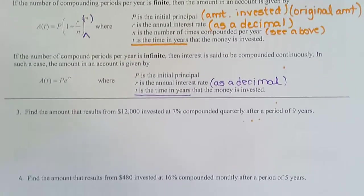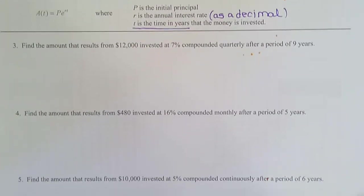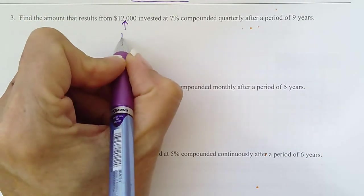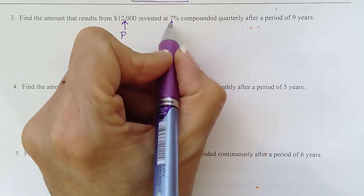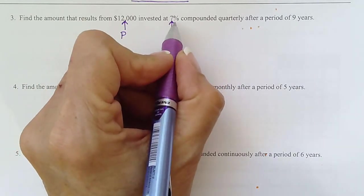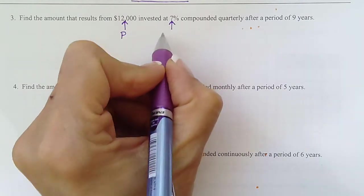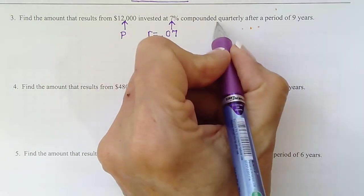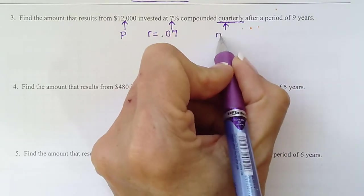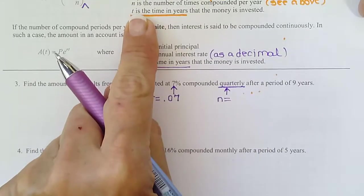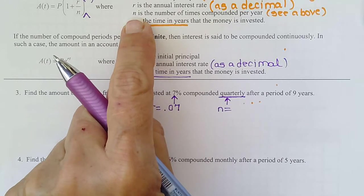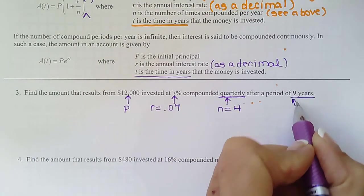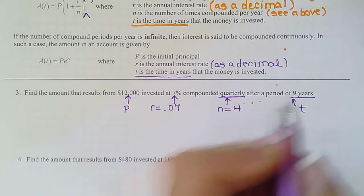Let's take a look at what we have here. Find the amount that results from $12,000 being invested. So what would $12,000 be called? What letter? P, right, the principal. And 7% - how would we write that as a decimal? Move the decimal place two places. Right now it's after the 7, so in front of the 7, add a 0. So it's 0.07. That will be my r. Quarterly - four quarters in a dollar, so the number of compounding periods is going to be 4. N is how many times it's compounded per year, and we just said 4. And 9 years, that's going to be my t. Because you can see t is time in years. So t equals 9.